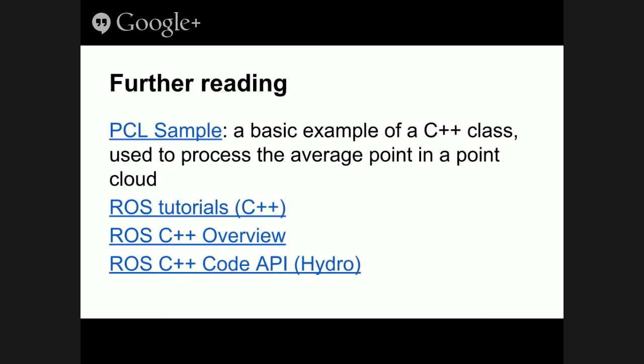For further reading: the ROS tutorials provide basic examples of publishers, subscribers, and services. The ROS C++ overview is great reading — the tutorials only give the tip of the iceberg, but the overview gives you more. For the full picture, look at the code API, which is generated documentation for all ROS classes, with all methods, documentation, and source code. These resources are listed in order of complexity. That's all — thank you.